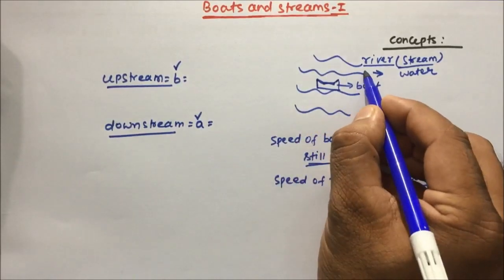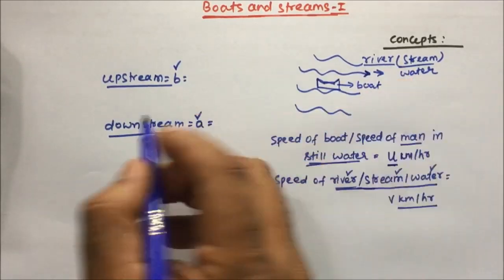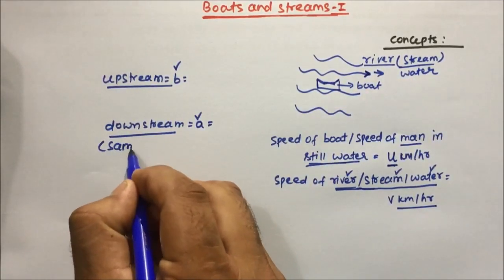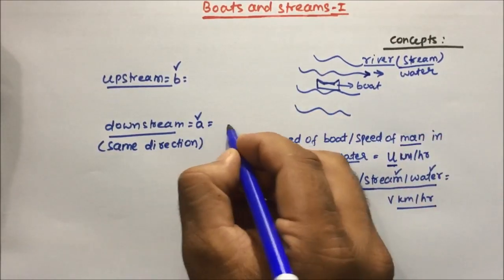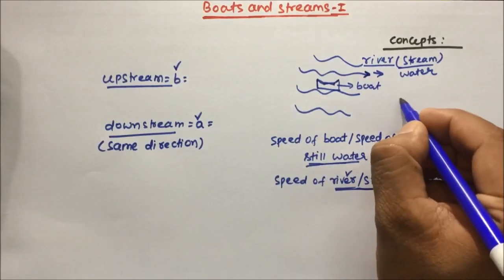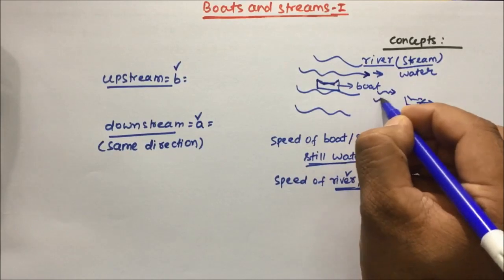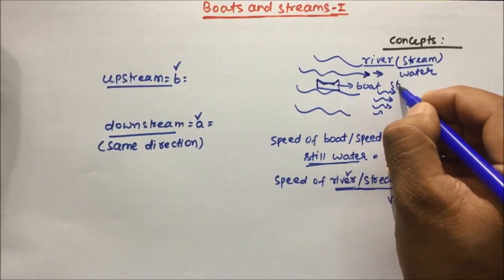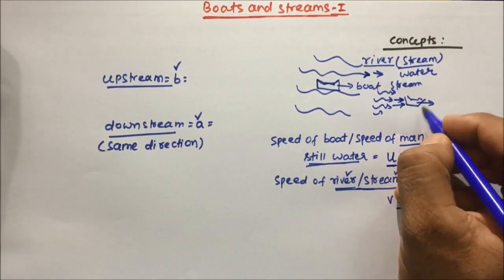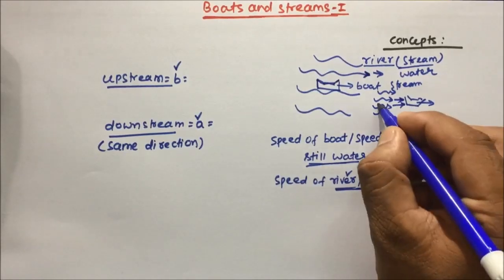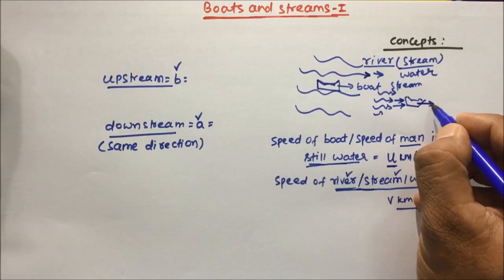Downstream is when the boat and the river or stream are moving in the same direction. So suppose the boat is moving and in the same direction the stream is also moving — the stream will put force on the boat and the boat's speed will increase, because the stream is pushing it in the same direction.